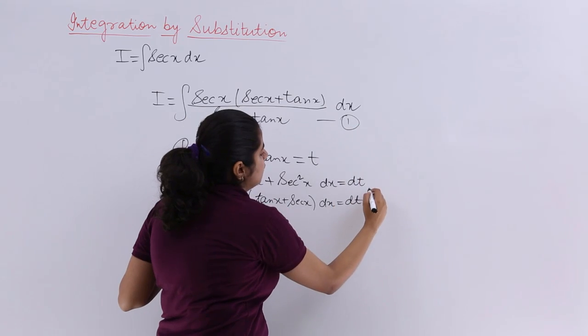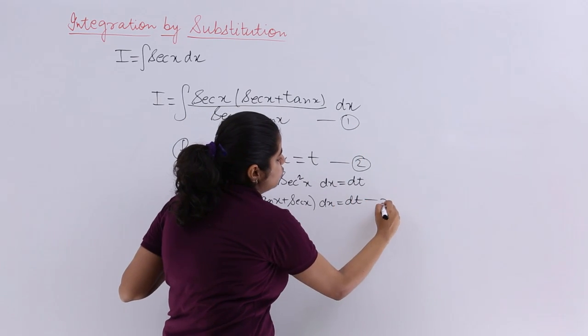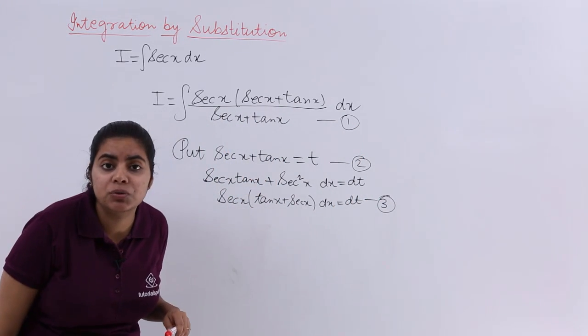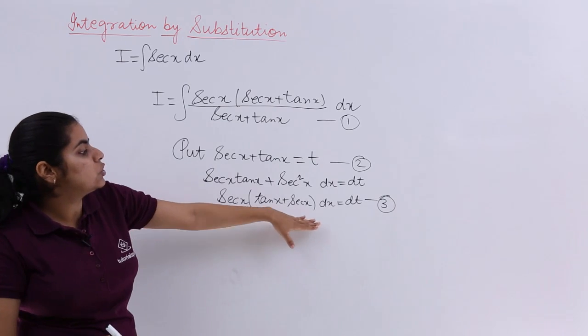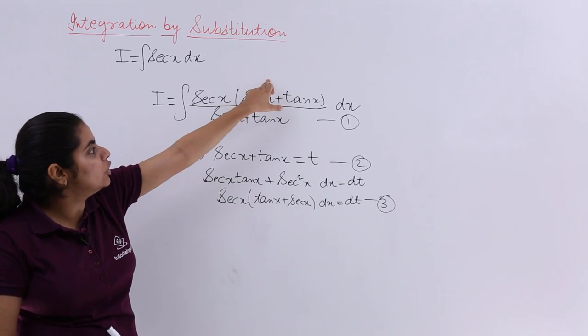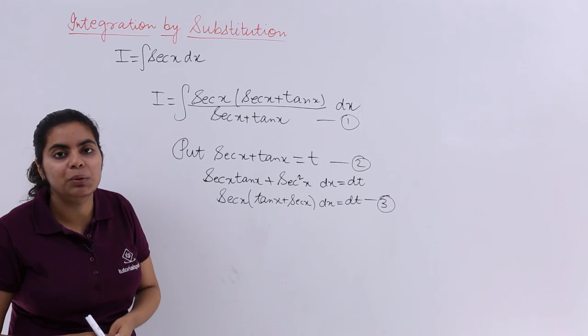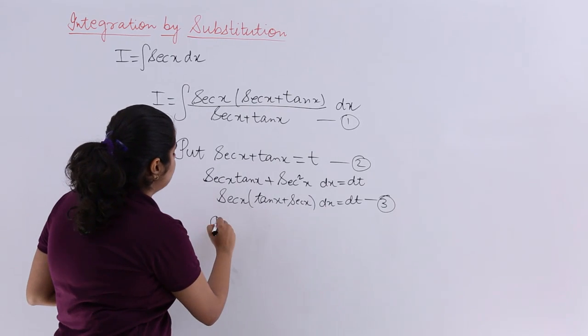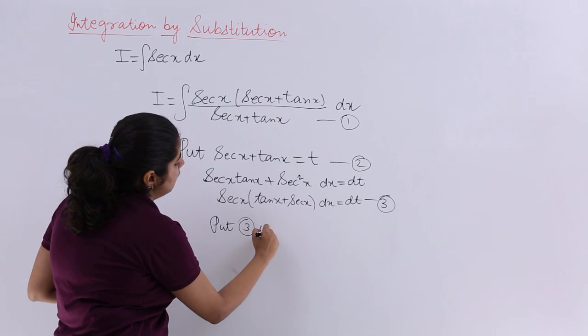If I have this as equation number 1, this as equation number 2, and this as equation number 3, you see the third equation is actually the numerator in equation number 1. So I can directly put 3 in 1.